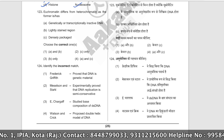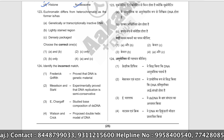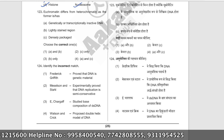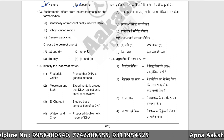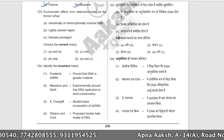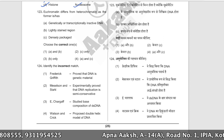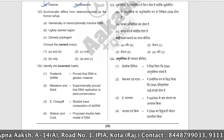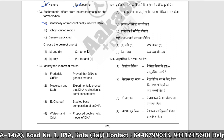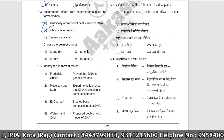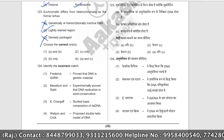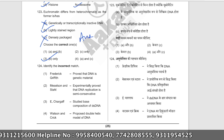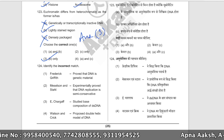Euchromatin differs from heterochromatin as the former is genetically and transcriptionally active — not inactive. Euchromatin is the lightly stained, loosely packed region that is transcriptionally active. Heterochromatin is densely packed. The correct answer is option number three.